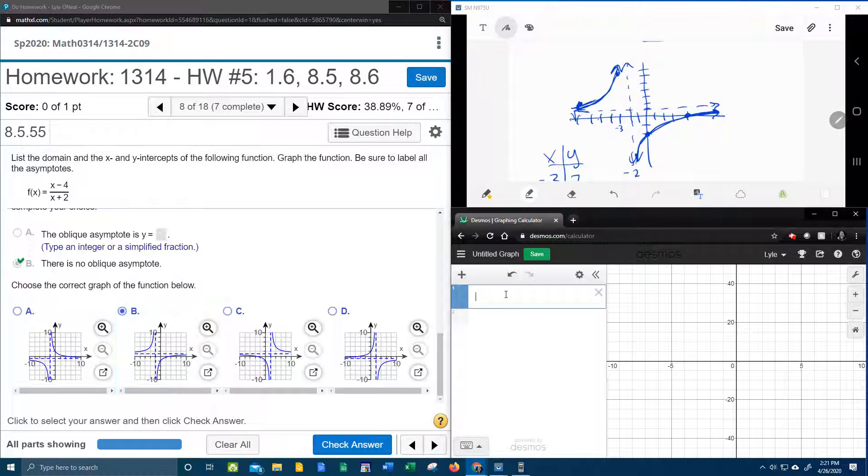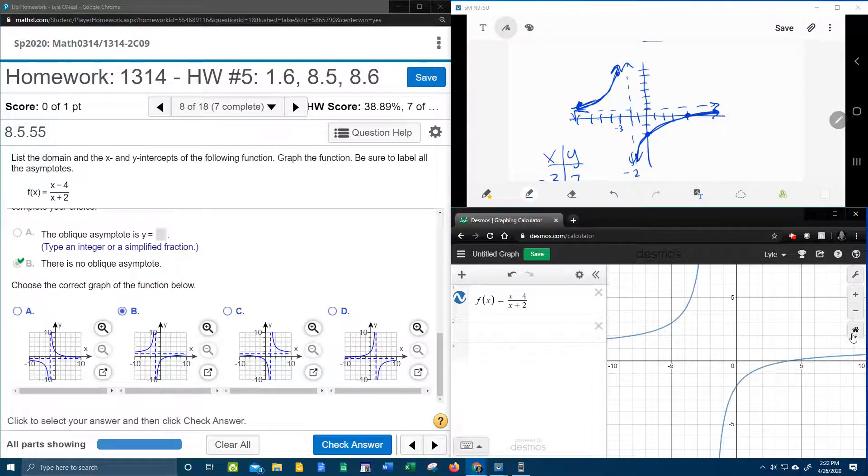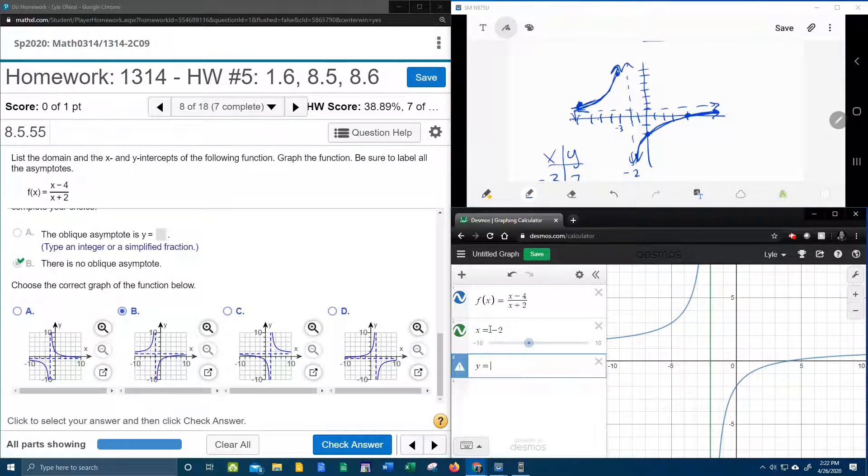And before I click the check, I'm going to go to Desmos and prove it. I want to prove it. So x minus 4 over x plus 2, whoops, plus 2, enter. And then can you see that over here? If I zoom home? And if I lay down my asymptotes, x equals, what was the asymptote? Negative 3, negative 2. And the y equals 1.